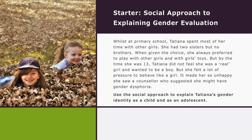Your starter is this scenario. Whilst at primary school, Tatiana spent most of her time with other girls. She had two sisters but no brothers. When given the choice, she always preferred to play with other girls and with girls' toys. But by the time she was 13, Tatiana did not feel she was a real girl and wanted to be a boy, but she felt a lot of pressure to behave like a girl. It made her so unhappy she saw a counsellor who suggested she might have gender dysphoria. Use the social approach to explain Tatiana's gender identity as a child and as an adolescent.